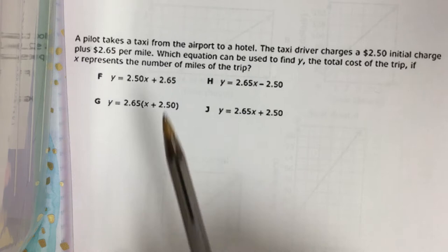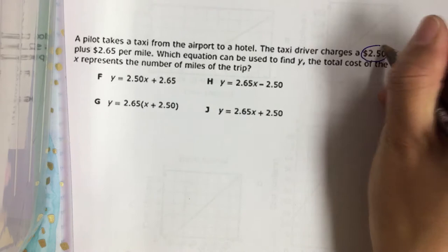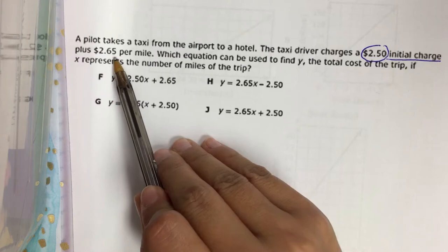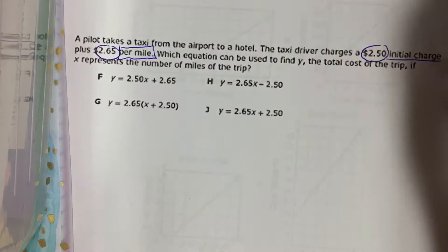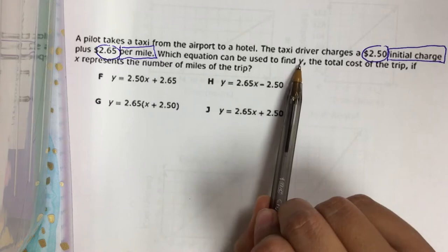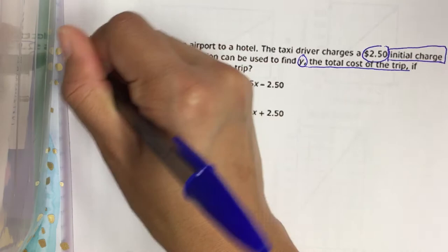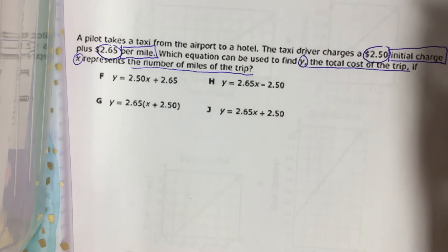A pilot takes a taxi from the airport to a hotel. The taxi driver charges a $2.50 initial charge plus $2.65 per mile. Which equation can be used to find y, the total cost of the trip, if x represents the number of miles of the trip?